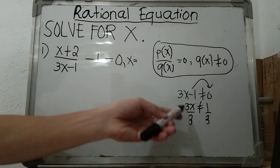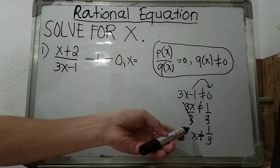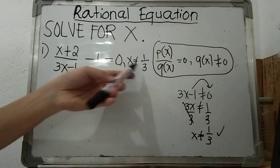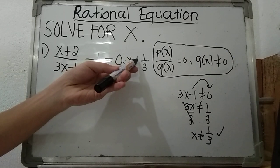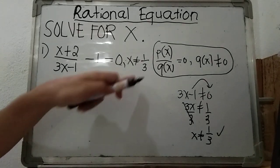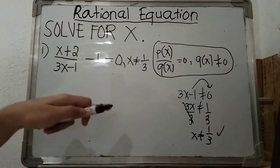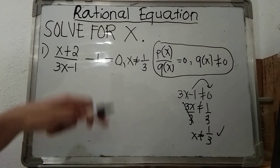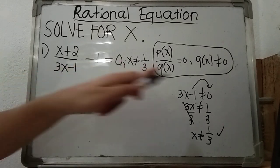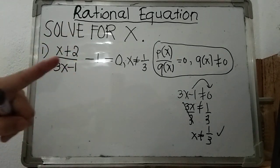Dividing both sides by 3, x should not be equal to 1/3. This is our restriction. The purpose of the restriction is that if ever you arrive at the same value from your solution as your restriction, then you have to reject it and do not accept it, because that value can make your denominator zero and you would be violating the definition of a rational equation. So first thing to do is to find the restriction.